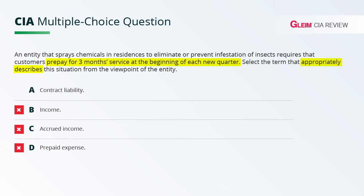An entity recognizes revenue for the transfer of promised goods or services to customers in an amount that reflects the consideration to which the entity expects to be entitled in the exchange. Revenue is recognized when the performance obligation is satisfied. Consideration received for an obligation yet to be satisfied, such as an advance payment or a customer prepayment, is recorded as a contract liability, which is otherwise known as deferred revenue. So clearly, contract liability — choice A — is the correct answer.